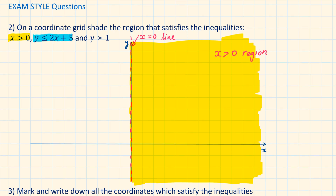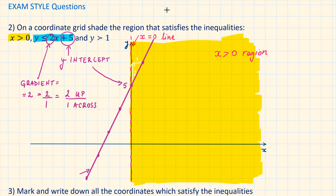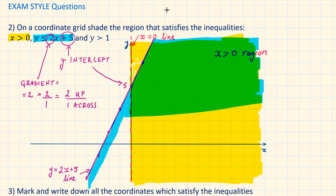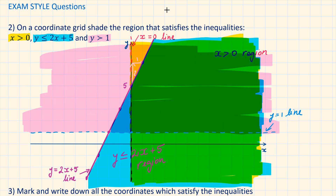To show the region represented by y is less than or equal to 2x plus 5, we start by drawing the line y equals 2x plus 5. The y-intercept is 5 — we plot this, then draw the gradient 2 up and 1 across starting from the y-intercept. Here we draw a solid line because we have less than or equal to. Because we have y less than 2x plus 5, we shade in the area below the line. To represent y is larger than 1, we draw a dotted horizontal line at y equals 1 and shade everything above this line.